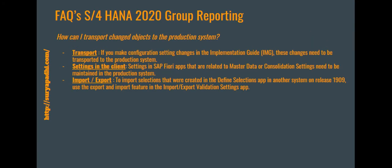How can I transport changed objects to the production system? Different objects follow different processes. Some objects follow the transport process, some you need to configure in the respective client, and for some objects you need to follow an import and export process.